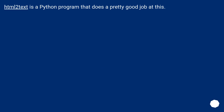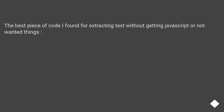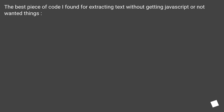HTML2text is a Python program that does a pretty good job at this. It's the best piece of code found for extracting text without getting JavaScript or other unwanted things.